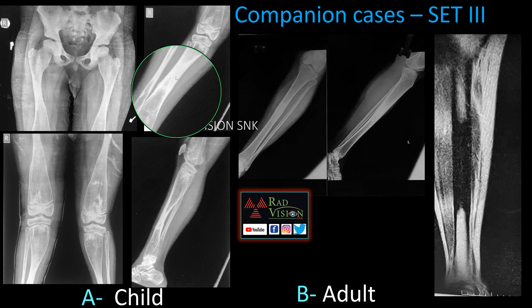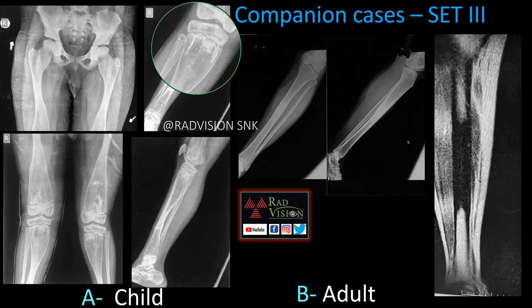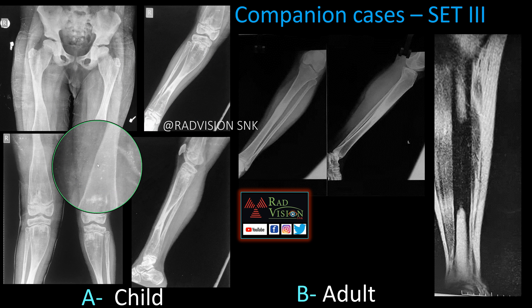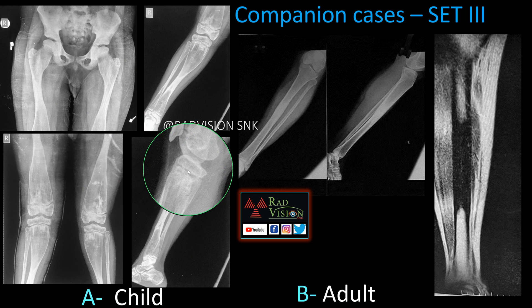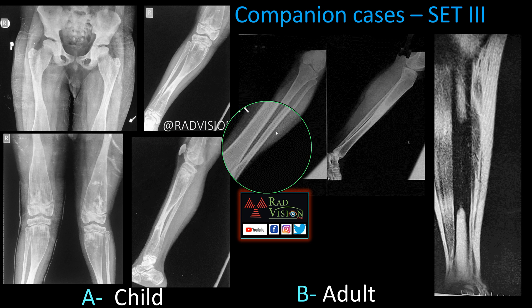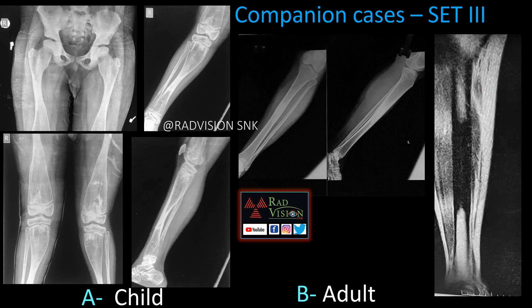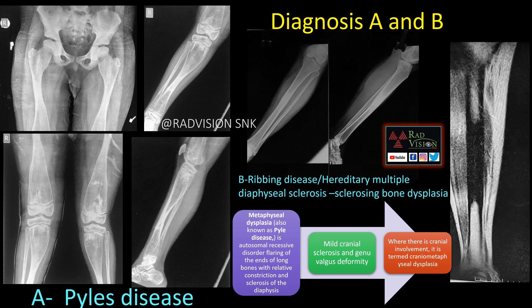Next case shows Erlenmeyer flask deformity with metaphyseal sclerotic bands and mid-diaphyseal sclerosis involving the tibia and femur — all long bones showing mid-diaphyseal sclerosis with Erlenmeyer flask deformity. This is Pyle's disease, also called metaphyseal dysplasia, with flaring of long bone ends, Erlenmeyer flask deformity, mid-diaphyseal sclerosis, sometimes cranial sclerosis and genu valgum. The adult case with mid-diaphyseal sclerosis that is hypointense on MRI is Ribbing's disease, also called hereditary multiple diaphyseal sclerosis.